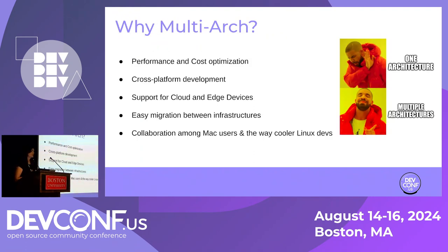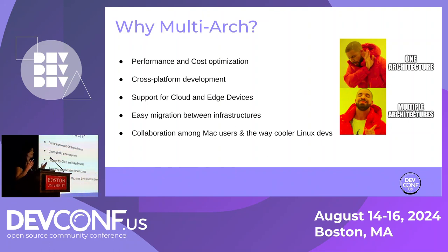So why is multi-arch important? Different architectures have different pros. Depending on your use case, you may need one over the other. Multi-arch is not something new — it's been around for quite a while. But there has been an explosion in it recently just because Macs switched over to using ARM chips. Macs are one of the most popular developer machines today, and you want the ability to build your container images and also run them in production, which is probably not an ARM chip-based infrastructure. Having the ability to easily migrate between infrastructure is important. You might also want to optimize for cost and performance.